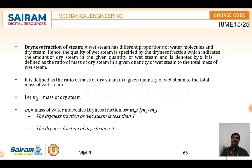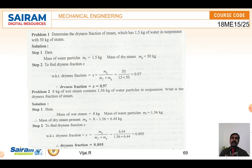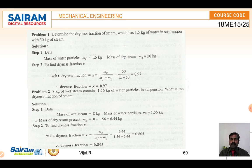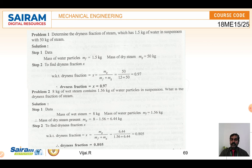If x equals 1, it is totally dry steam. Here is a problem: determine the dryness fraction of steam which has 1.5 kg of water in suspension with 50 kg of steam. The data given: mass of water particle mf = 1.5 kg, mass of dry steam mg = 50 kg. Using the formula x = mg / (mf + mg): x = 50 / (1.5 + 50) = 0.97. Since the dryness fraction is 0.97, it is wet steam.